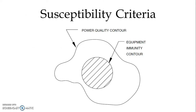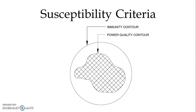Now we study susceptibility criteria. We know that we have two contours as shown in the figure. If the equipment immunity contour is smaller than the power quality contour, then there is always a chance of failure or some other problem in the equipment. But if the immunity contour is greater than the power quality contour, then it is an immune equipment and power quality will not affect the performance of the equipment.